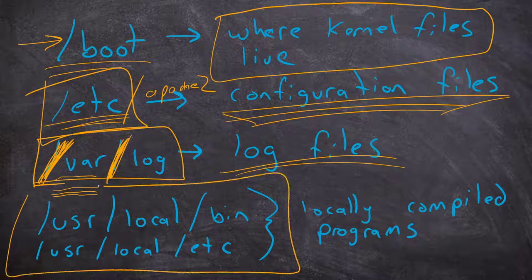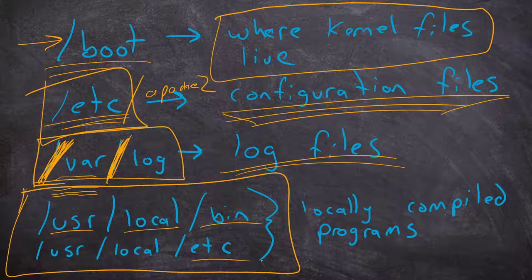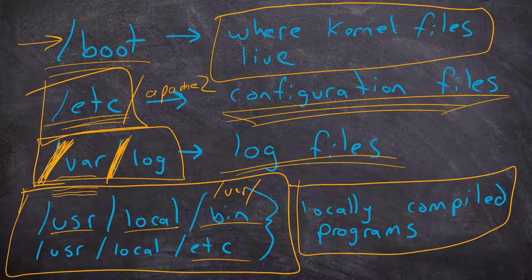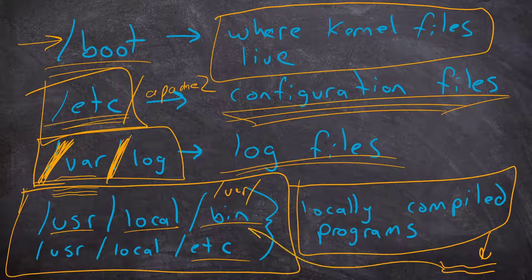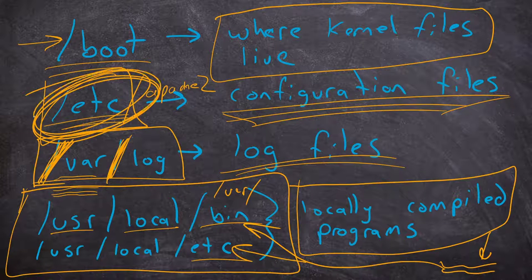One last group: /usr/local, and inside it /usr/local/bin, /usr/local/etc, and sometimes /usr/local/var. This is generally where you put locally compiled programs — programs you didn't install with the package manager, but downloaded the source code and compiled yourself. You put those binaries in /usr/local/bin and configuration files in /usr/local/etc. That's standard practice so you don't accidentally overwrite something the package manager put in the /etc folder.